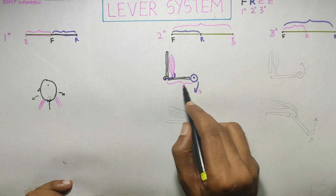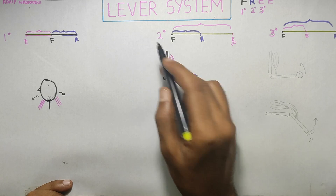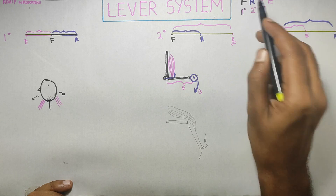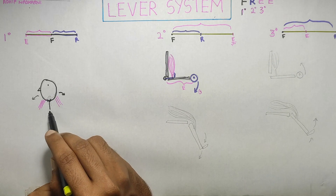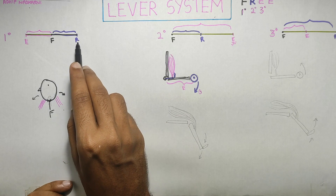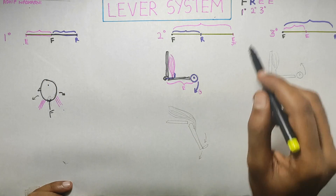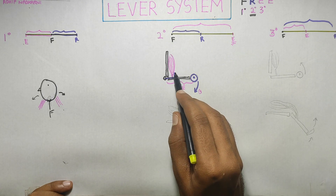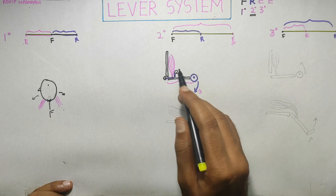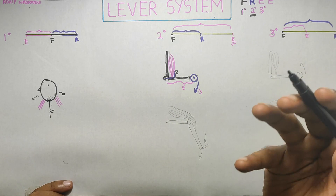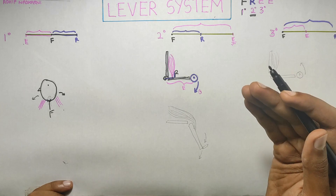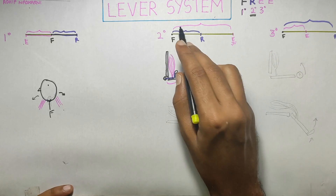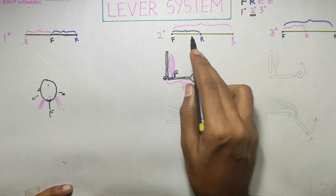To remember the lever systems, use the mnemonic FRE: in the First degree, the Fulcrum is in the middle with resistance arm on one side and effort arm on the other. In the Second degree, the Resistance arm is in the middle — the biceps is trying to pull but losing. The Effort arm is whenever you win, and in second degree the effort arm is bigger than the resistance arm.